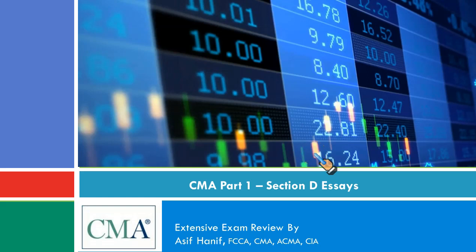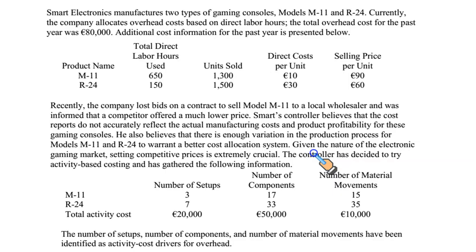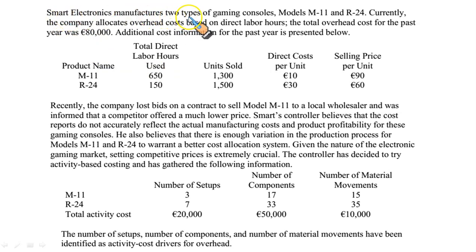CMA Part 1, Section D, Essay Type 2. This is a comparatively bigger essay scenario. Smart Electronics manufacturer manufactures two types of gaming consoles — Xbox type and Sony PlayStation type — model M11 and R24.